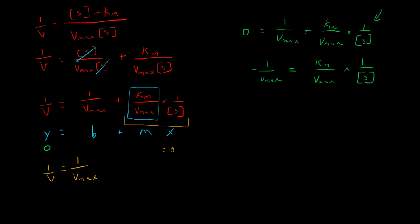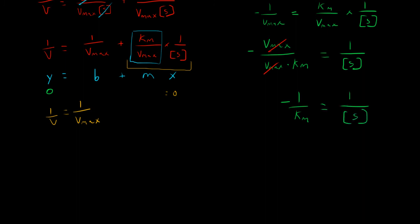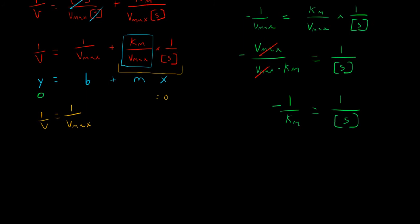And then if we divide by this value, we get negative Vmax over Vmax Km equals our one over S. And in fact, we can cancel these out. And what we're left with is negative one over Km is equal to our one over substrate. So at our y-intercept, we have one over Vmax. And at our x-intercept, we have our minus one over Km.